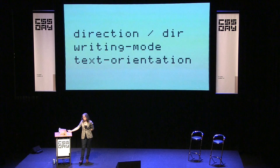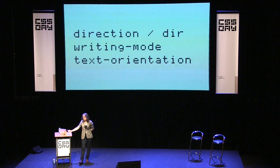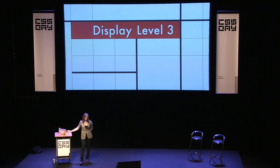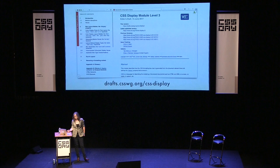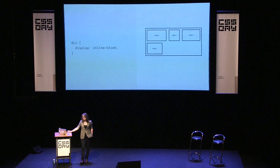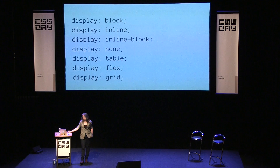I started reading the display spec a month or so ago thinking, what the heck is in here? I'm specifically talking about the level three draft. I'm sure any of you who write CSS are totally familiar with display block, display inline, display inline-block — these are the display properties we're used to, the ones we know. These all work like 'display value.' But there's a proposal in the current draft to change the mental model, and even if we never write code exactly like this, it changed the way I think about display.